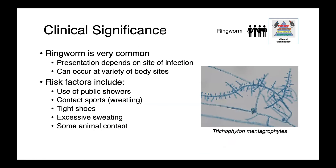In people, ringworm is very common. Presentation depends on the site of infection and it can occur at a variety of body sites. Risk factors include use of public showers, contact sports — particularly things like wrestling — tight shoes, people who sweat excessively, keeping a warm and moist environment on the body, and animal contact.